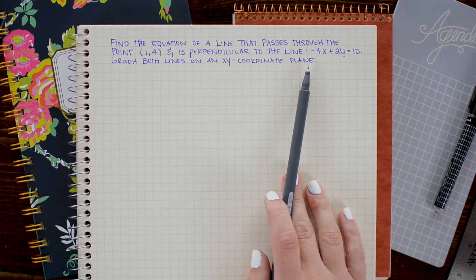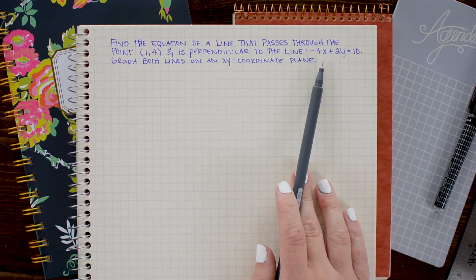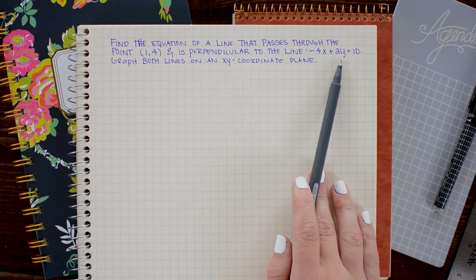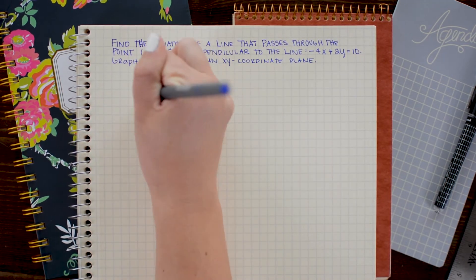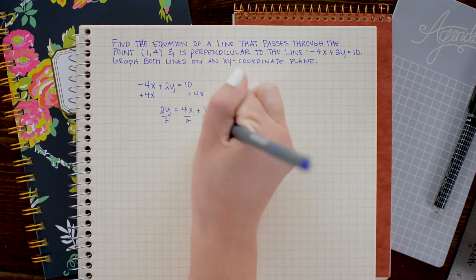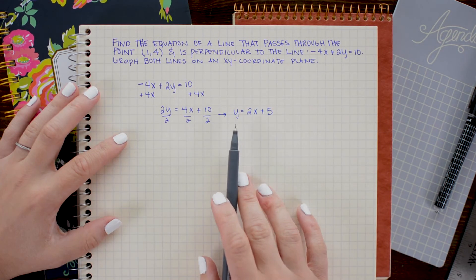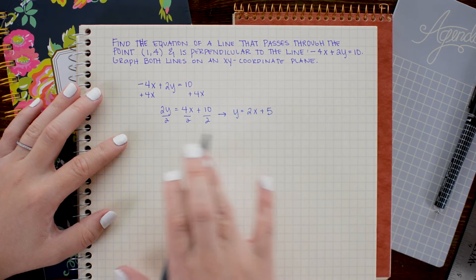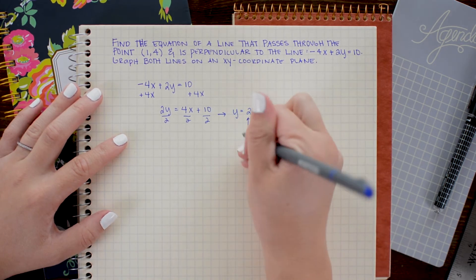The first thing I need to do is figure out the slope of the line that they give me. So I'm going to take this equation and solve for y so that I can easily read off the slope from slope-intercept form. So from this equation, I now know that the slope of this line is 2.